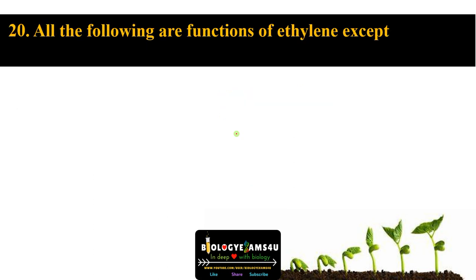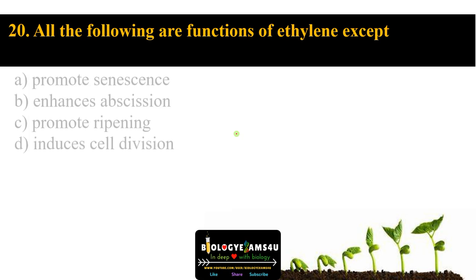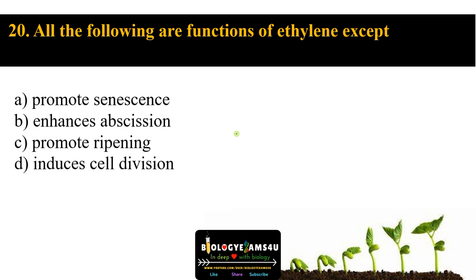Question number twenty: all the following are functions of ethylene except. Option A promotes senescence, option B enhances abscission, option C promotes ripening, option D induces cell division. Promoting senescence is true — it is called the senescence hormone. Enhancing abscission and promoting ripening are also true. Inducing cell division is the wrong statement — ethylene is a growth inhibitor that inhibits cell division. So D is the answer.